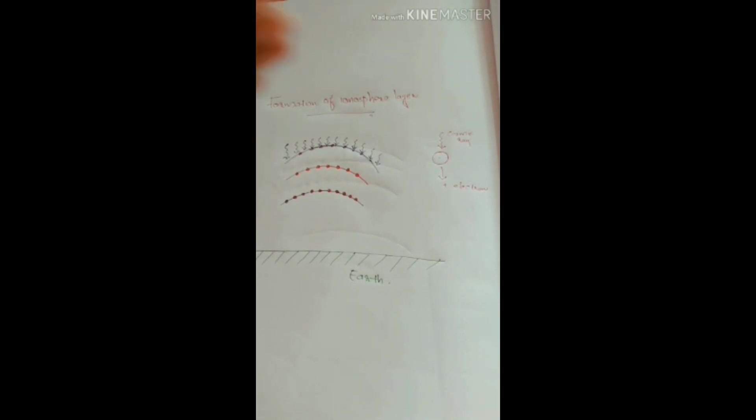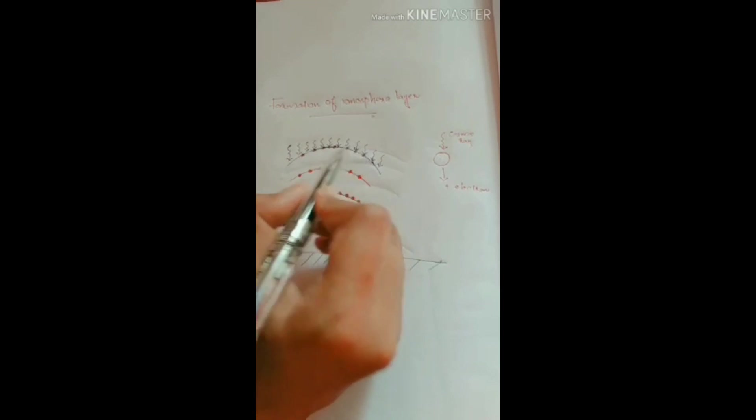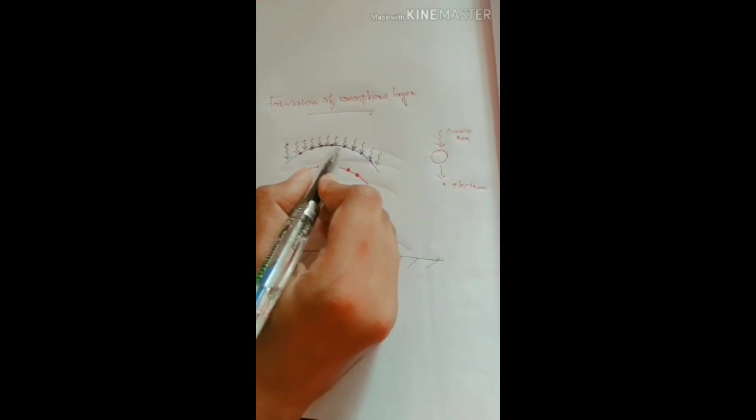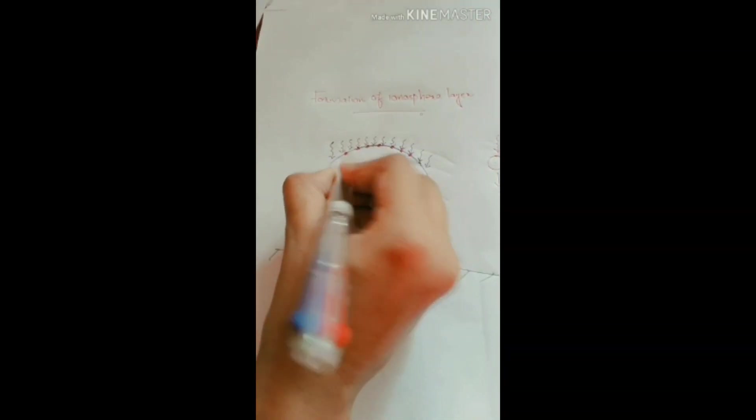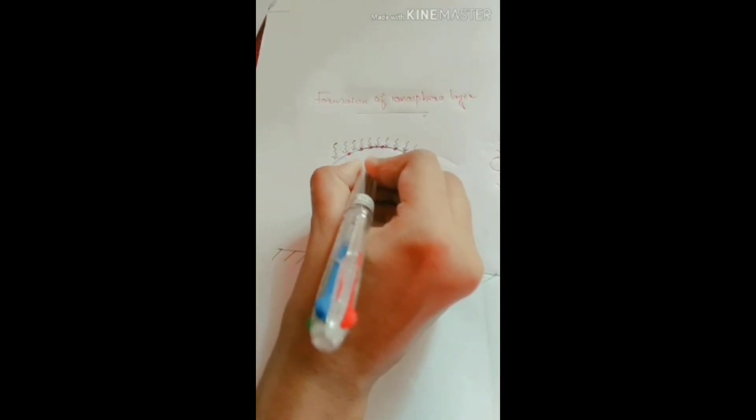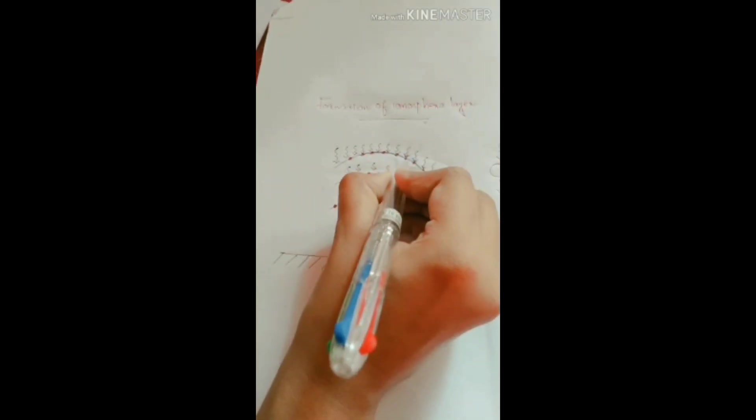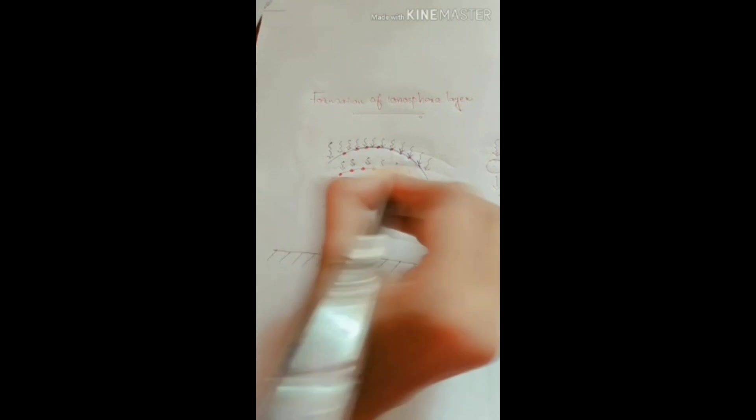The cosmic ray is very dense and high in the top region, and after hitting and making ions, it moves to the next layer. At that time, the density of cosmic rays is reduced. Cosmic rays are reduced when moving downwards.